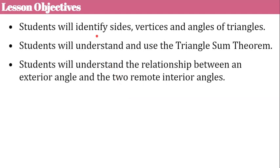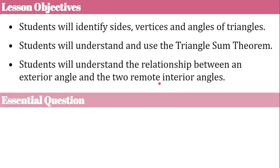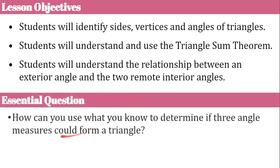Today my lesson is on triangles and we're going to talk about the interior and exterior angles. Here are our objectives: we are going to identify sides, vertices, and angles of triangles. We will understand and use the triangle sum theorem and we will understand the relationship between an exterior angle and two remote interior angles. The question I'd like you thinking about today is: how can you use what you know to determine if three angle measures could form a triangle?